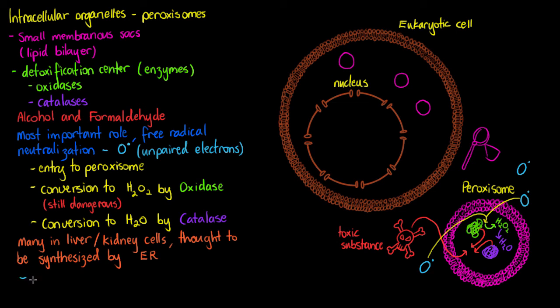But we also have the peroxisomes involved in another job which we'll only talk about very quickly and that is lipid catabolism. We're going to be oxidizing long chain fatty acids through beta-oxidation and that's going to be happening within our peroxisome as well.